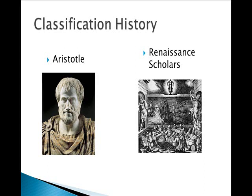Aristotle's classification schemes were based on the 20 questions version of nature, or at least that's what I call it. So is it a plant or an animal? If it's an animal, does it fly, crawl, or swim? He used simple classifications and common names, which led to a lot of confusion.